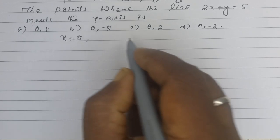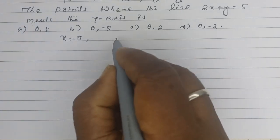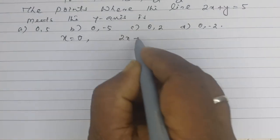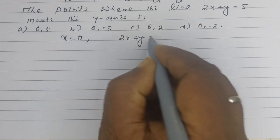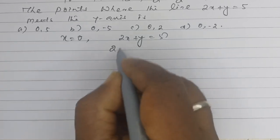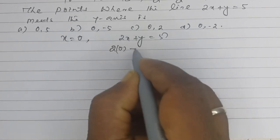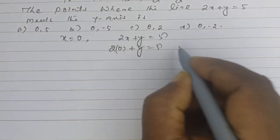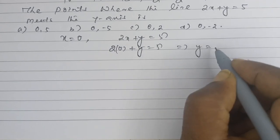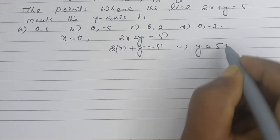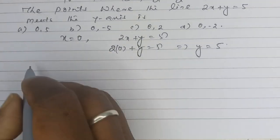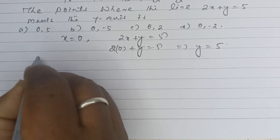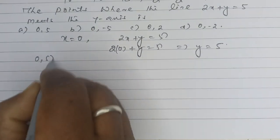Keeping the value of x in the equation 2x plus y equals 5: substituting gives 2 into 0 plus y equals 5, so y equals 5. Therefore, the point is (0, 5).